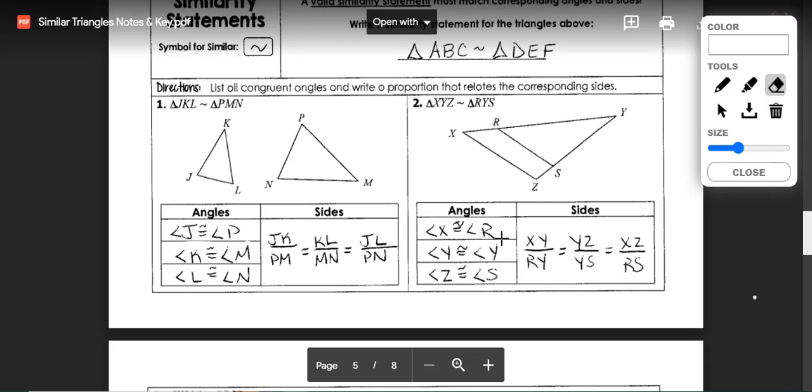So small triangle on the top, big triangle on the bottom or big triangle on the top, small triangle on the bottom. It doesn't matter as long as it's consistent across all three.